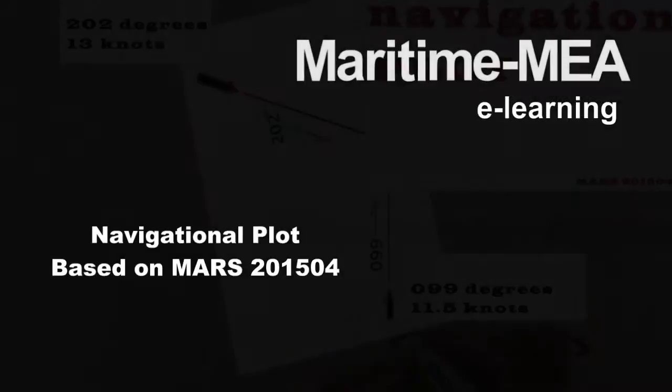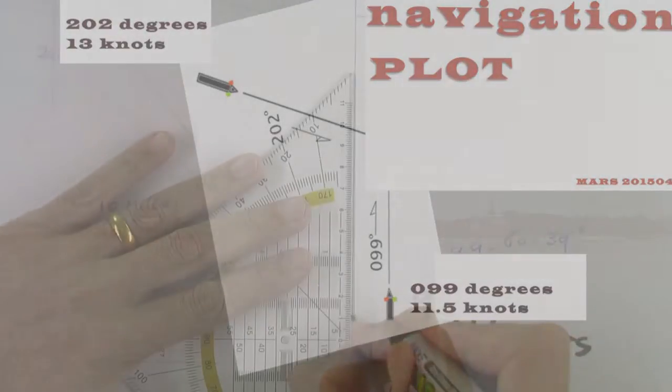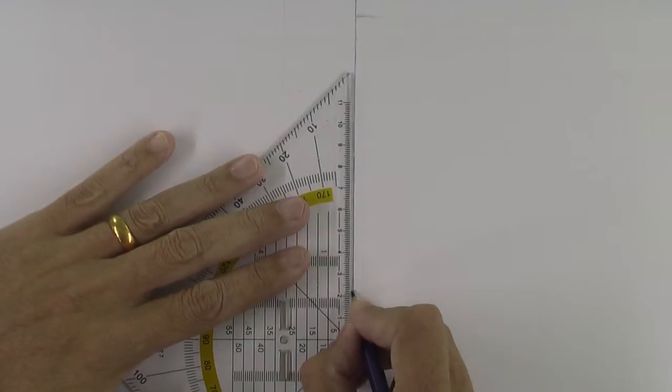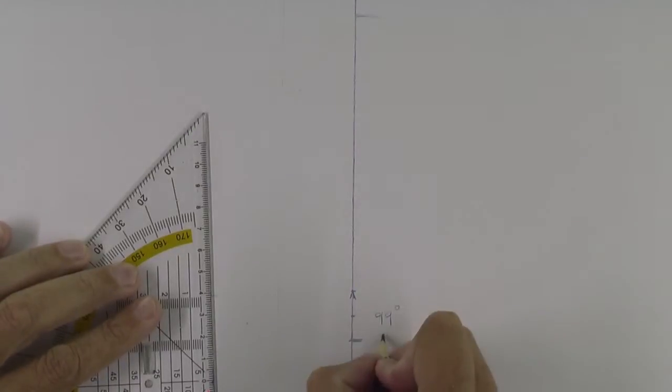Welcome to Monitor Me. This is a navigational plot based on MARS 2015-04. It's about two ships in almost a collision or not collision course. This is what we calculate with a plot.